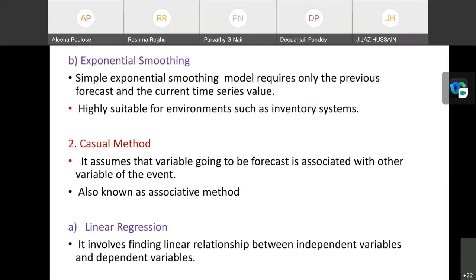Next one is casual method. It assumes that the variable going to be forecast is associated with other variable of the event. It's also known as associative method. In this, there are several types of techniques. One of them is linear regression. In linear regression, it involves finding a linear relationship between the independent and dependent variables.